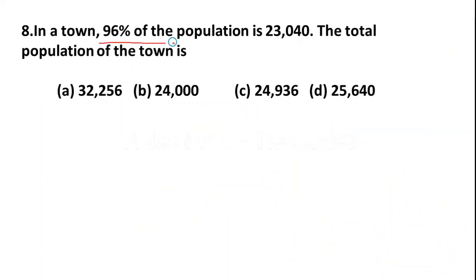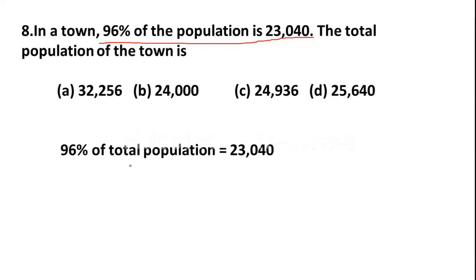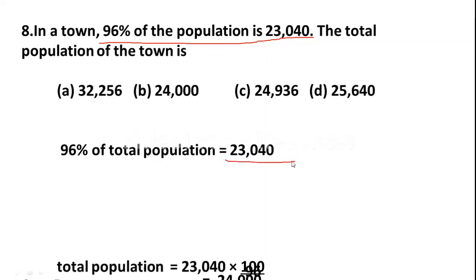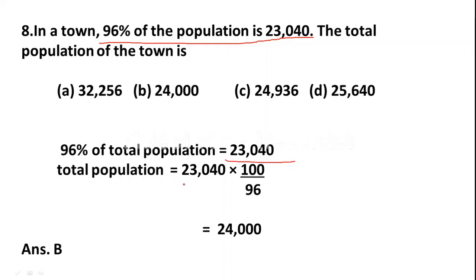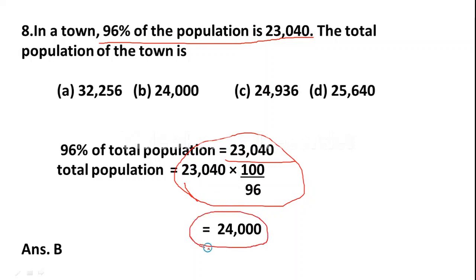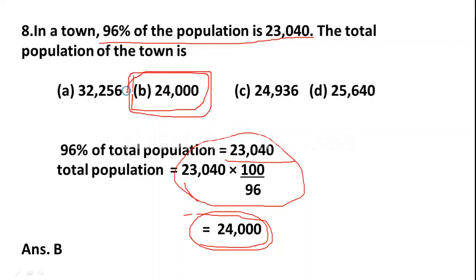Question 8: In a town, 96% of the population is 23,040. The total population of the town is — Option A: 32,256, Option B: 24,000, Option C: 24,936, Option D: 25,640. Total population = 23,040 × 100 ÷ 96 = 24,000. So Option B, 24,000, is the right answer. This is an easy question on percentage.